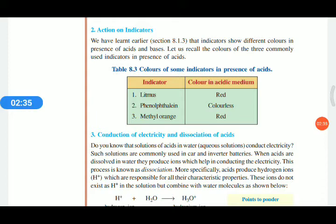When acids are dissolved in water they produce ions — this process is known as dissociation. Ions are charged particles, and electric flow is the flow of charged particles. So dissociation of acid helps the conduction of electricity. In gas form, HCl does not show the property of acid.